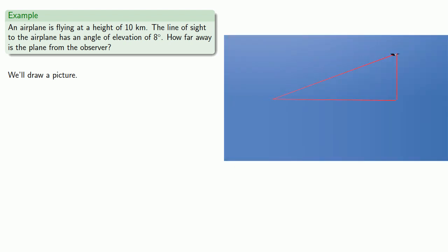Now an important idea in these problems is to look for the right triangle. Remember, height is always measured perpendicular to the ground. And since the plane is at a height of 10 kilometers, this means that the perpendicular distance from the ground to the plane is 10 kilometers.